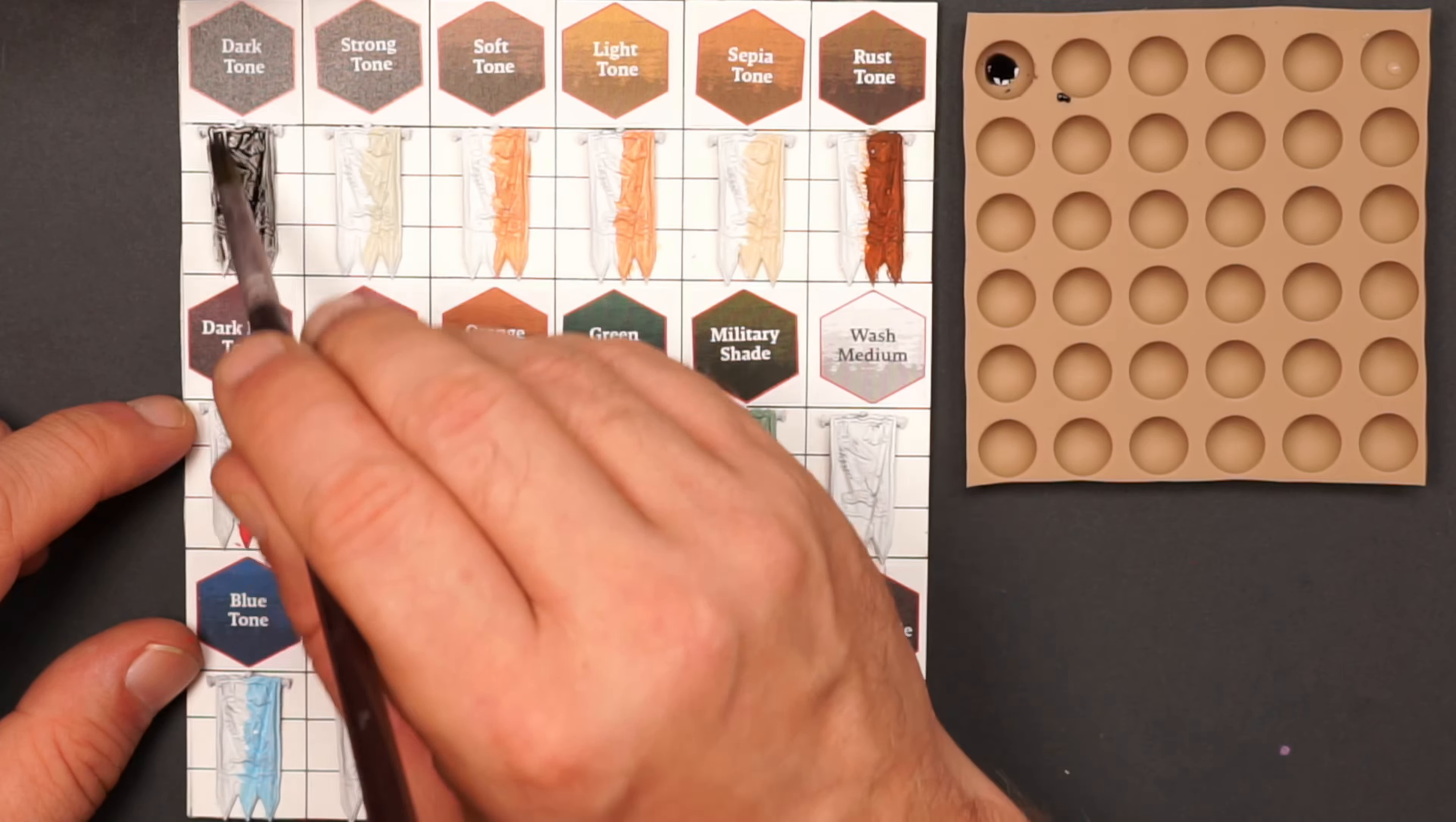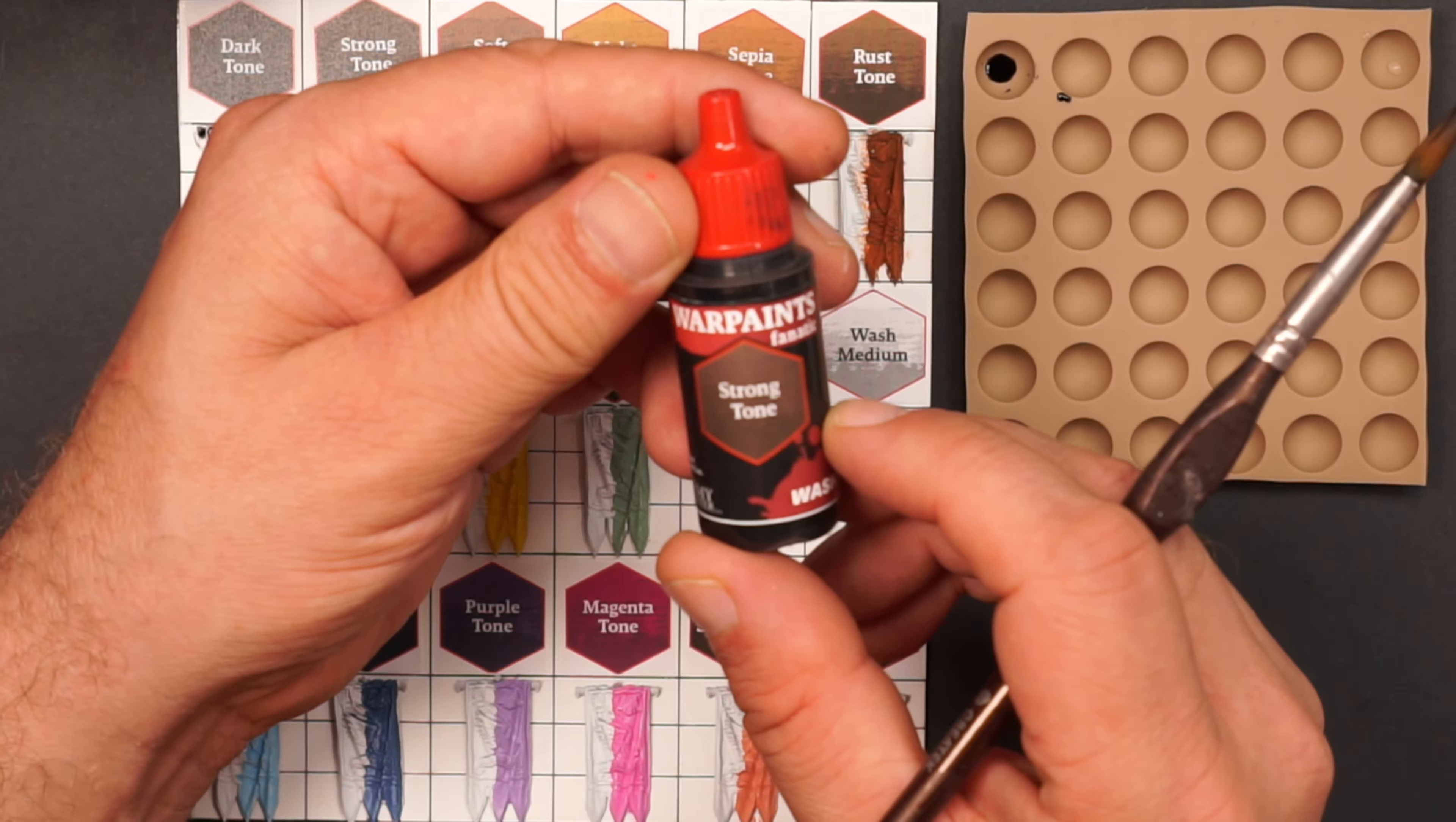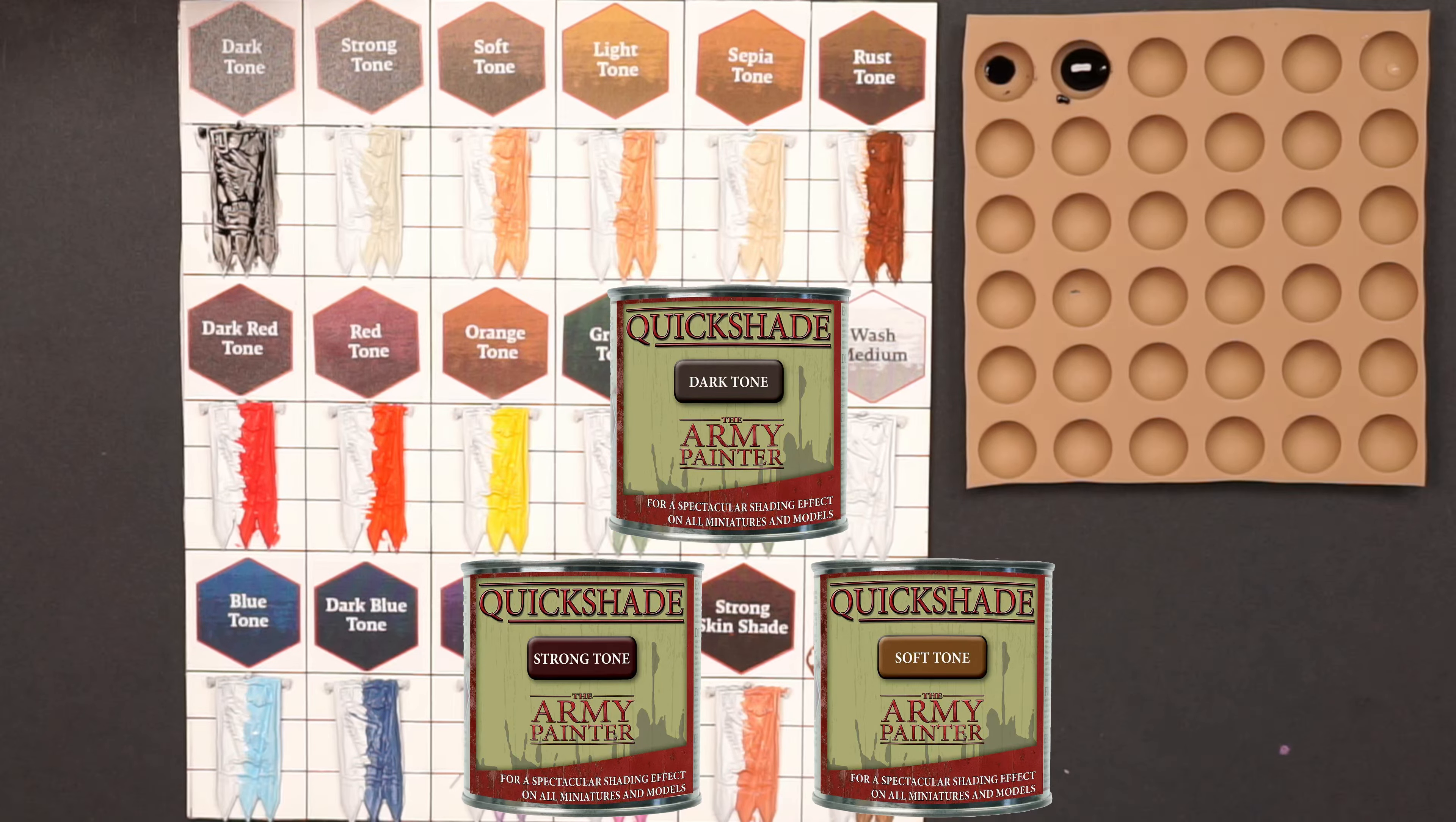According to the Army Painter, some of the washes have been renamed and are still the same as in the old war game series, so they haven't changed the recipe for the Fanatics on all the washes. A couple of them got a name change and then they added some new colors. The dark tone, the strong tone, and the soft tone are actually the same colors as the old quick shades. This was the origin of the Army Painter, the quick shade dip.